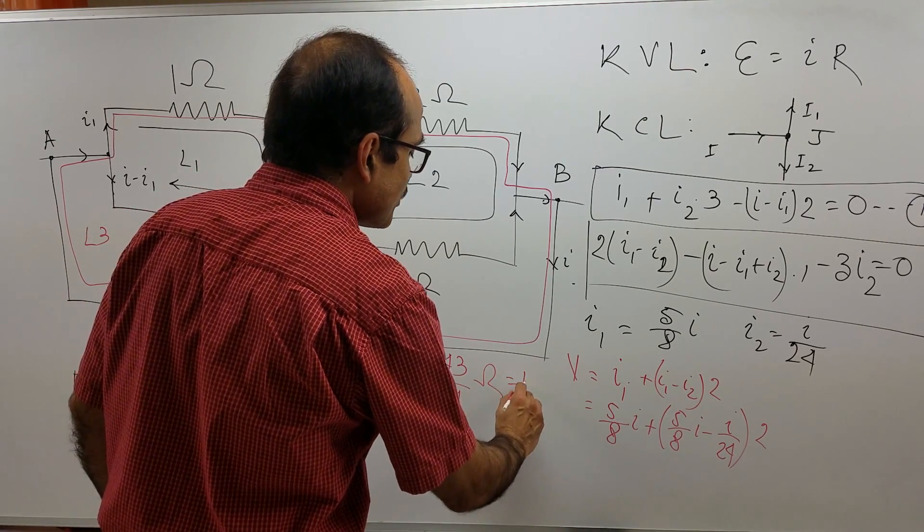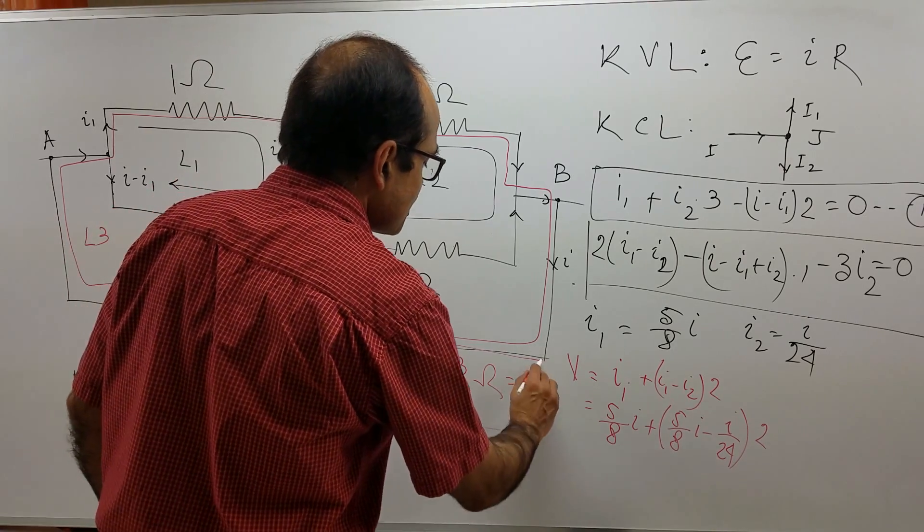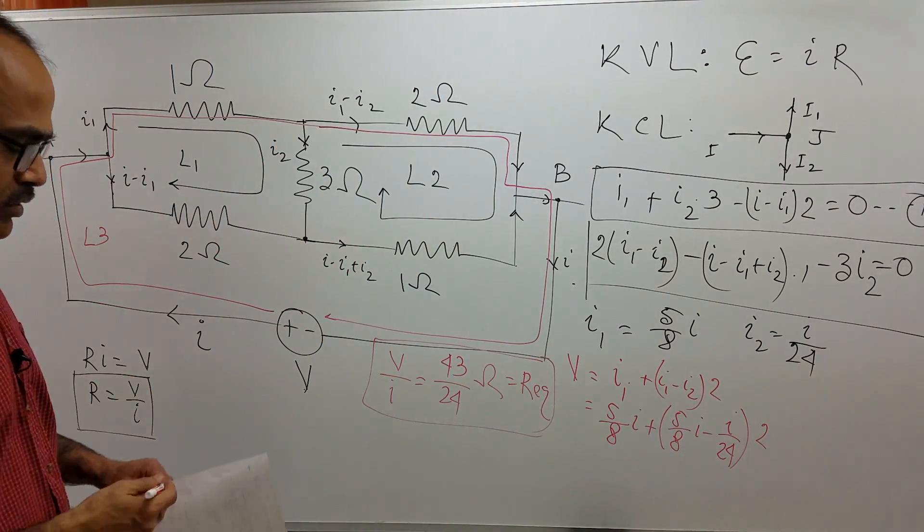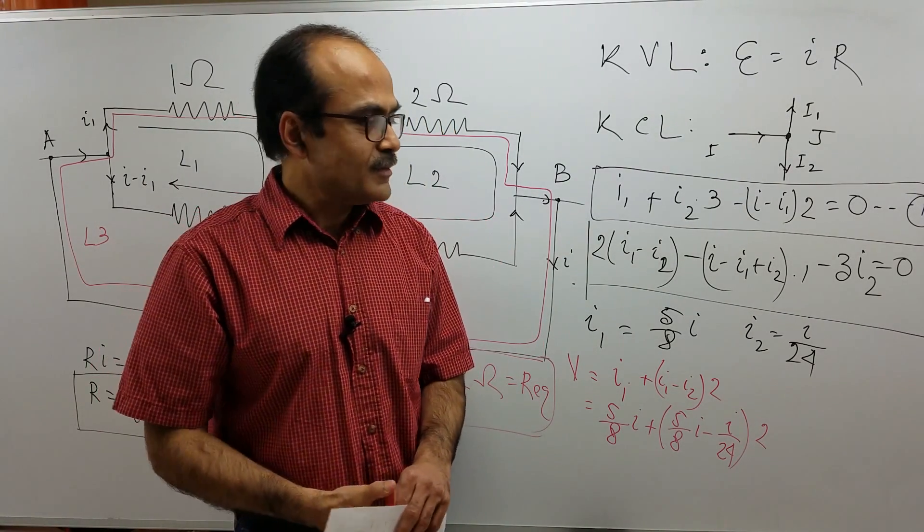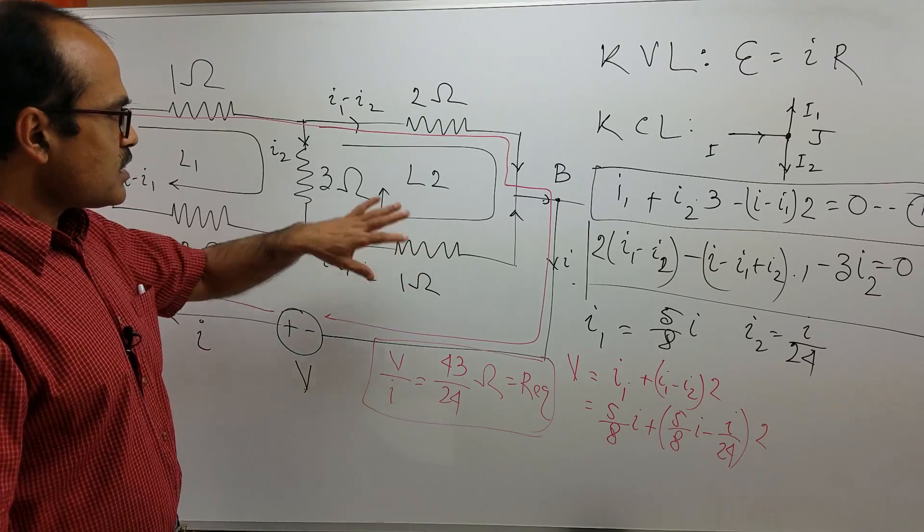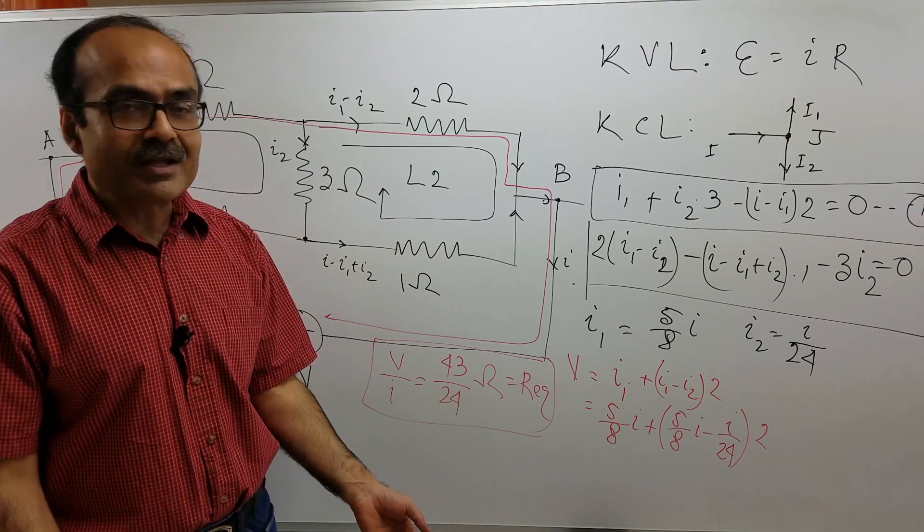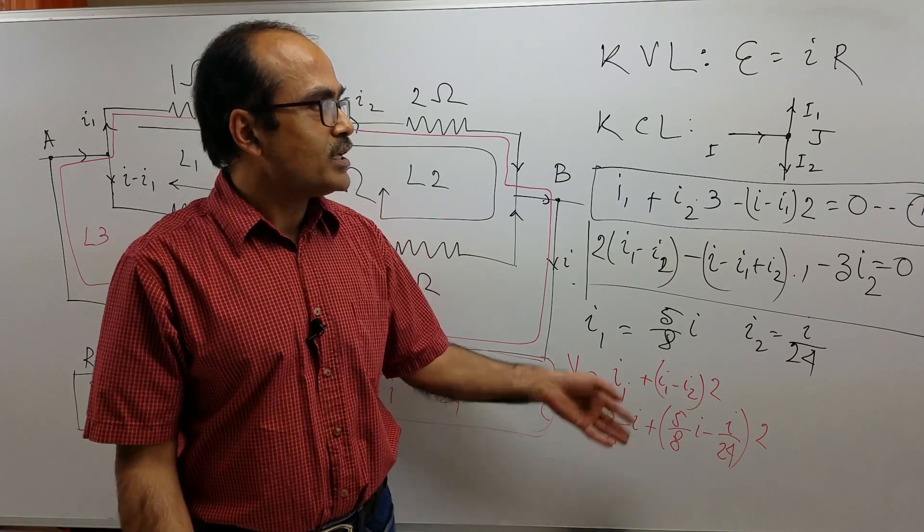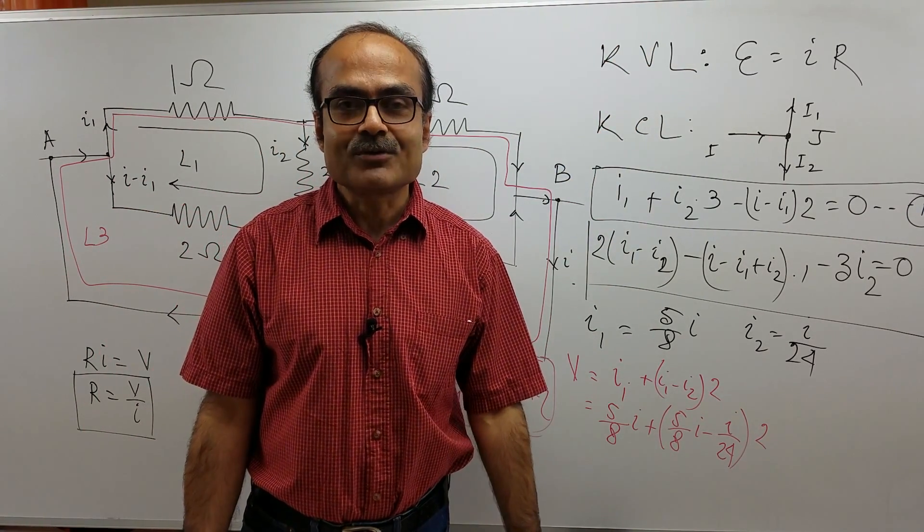So this is the R equivalent of this entire network. That is how we find the R equivalent of a number of resistors which are connected neither in series nor in parallel by using KVL and KCL. Thanks for watching.